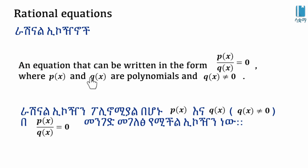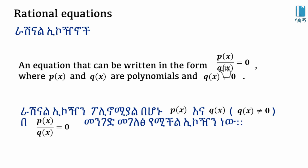A rational equation is a polynomial over a polynomial. We will talk about the equality of the equation.